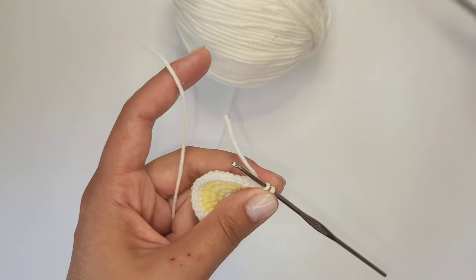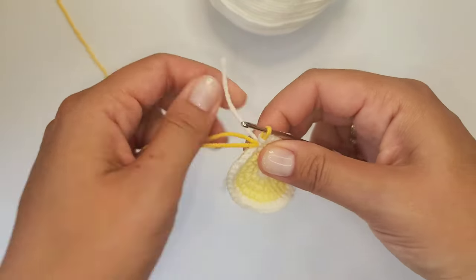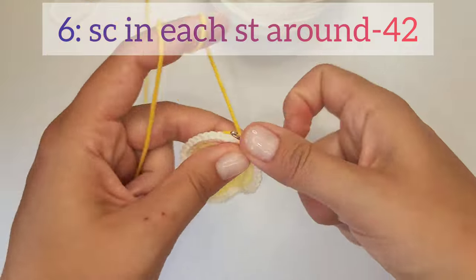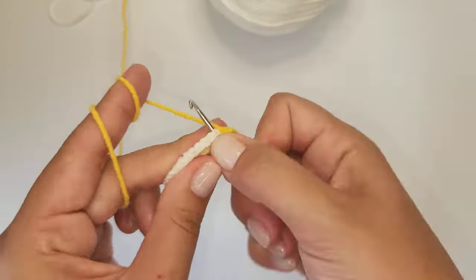Cut the thread and change the color again. That's the last round and we are going to crochet a single crochet stitch in each stitch of the previous round. 42 stitches for round 6.